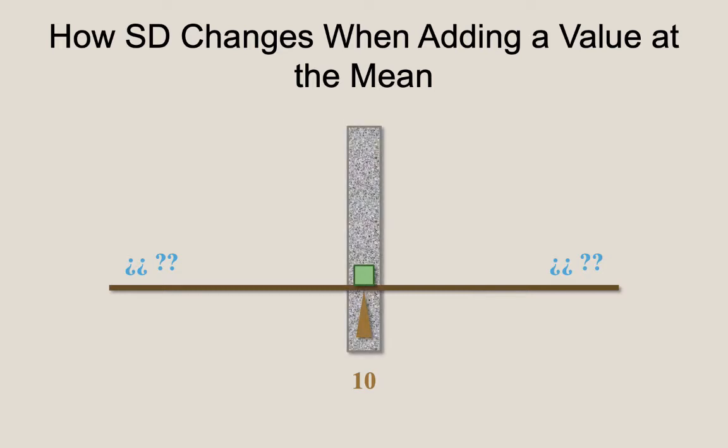If we use the milepost analogy, we've added a value that has no additional distance from the milepost. So the overall average of distances from the milepost has gone down a little bit.